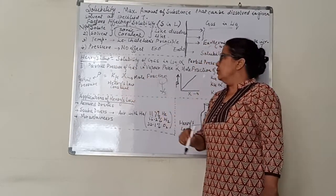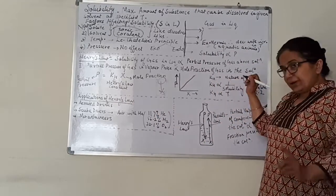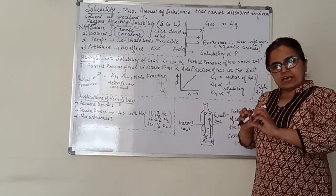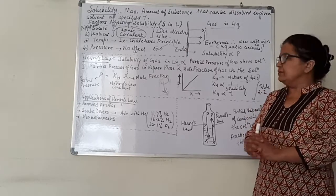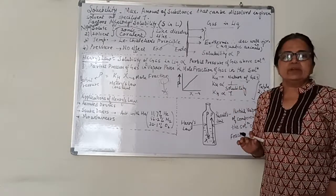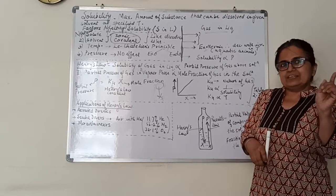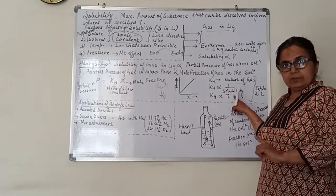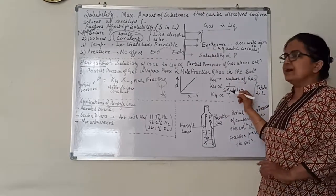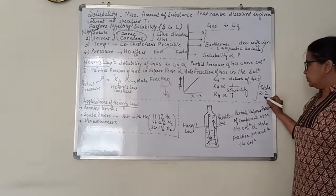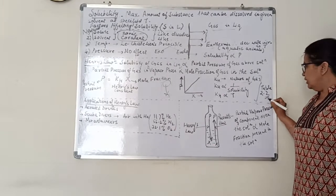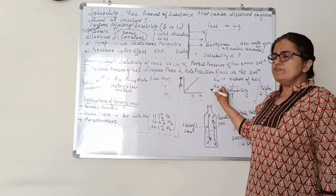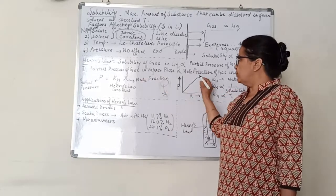K_H is dependent on the nature of the gas — different gases have different K_H values depending on gas size and intermolecular forces. K_H is inversely proportional to solubility, meaning if solubility is more, K_H will be less. Since solubility and temperature are inversely related for gases, K_H is directly proportional to temperature. You can refer to Table 2.2 in your NCERT textbook. Since partial pressure and mole fraction are directly proportional, a graph between them gives a straight line. One application is aerated drinks: more CO₂ pressure above the bottle means more CO₂ dissolved in solution.